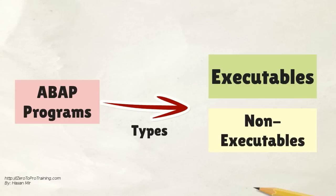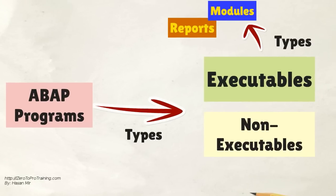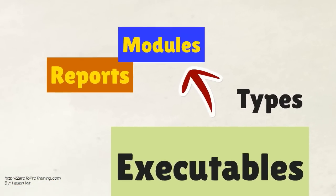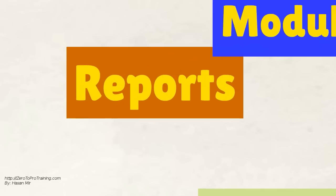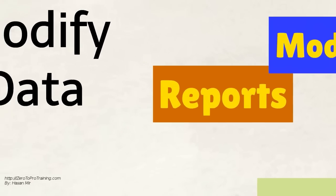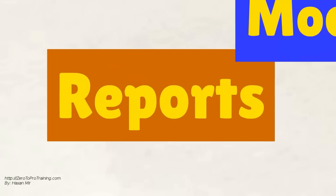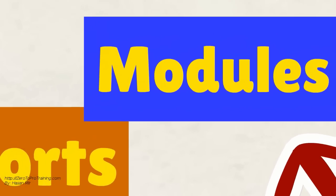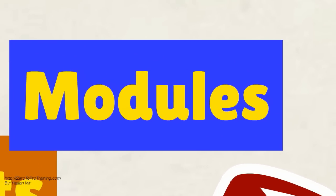There are two types of ABAP programs: executable programs, which can be run by users, and non-executable components, which are used in other ABAP programs. There are two types of executable programs: reports and module pools. Reports follow a relatively simple programming model, though they can also be designed to modify data. Module pools define more complex patterns of user interaction using a collection of screens. Each screen also has a flow logic, which refers to the ABAP code implicitly invoked by the screens.